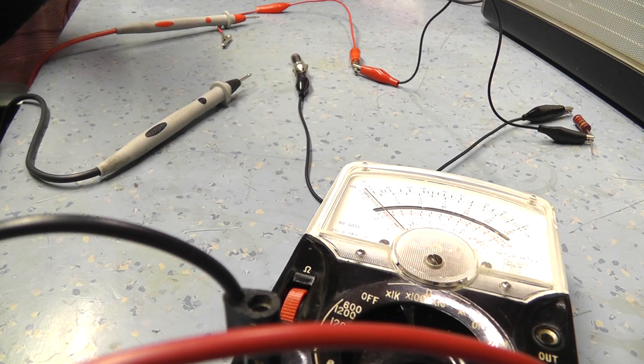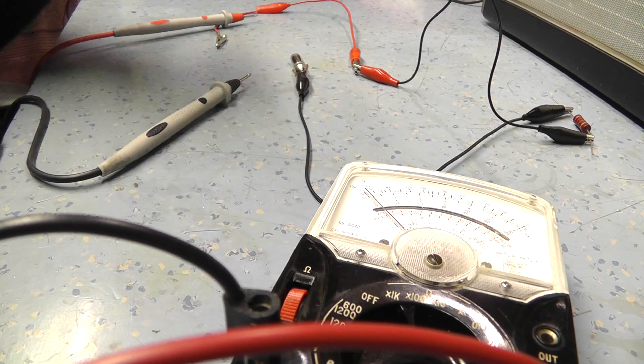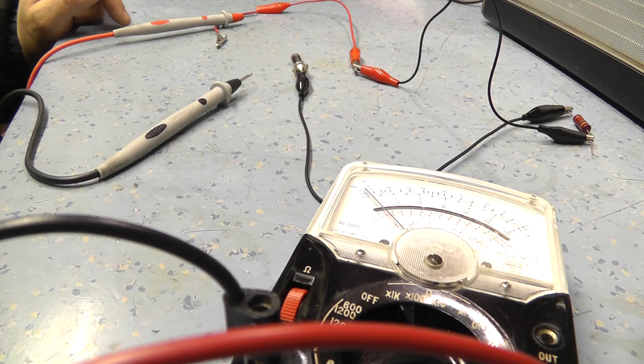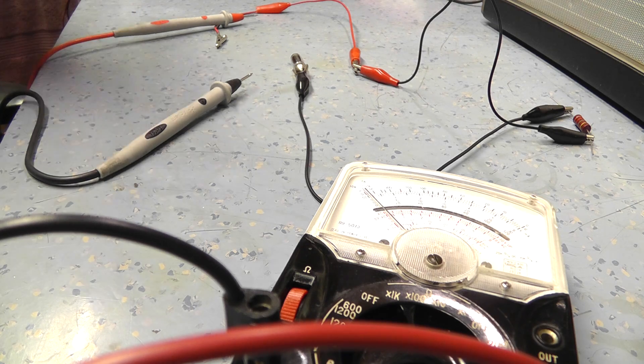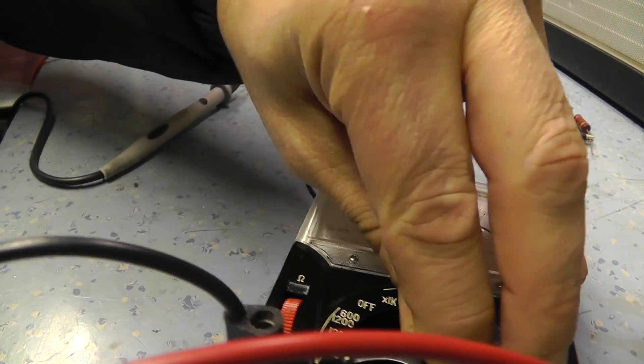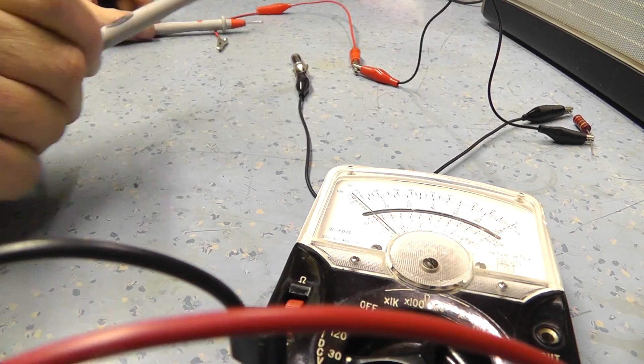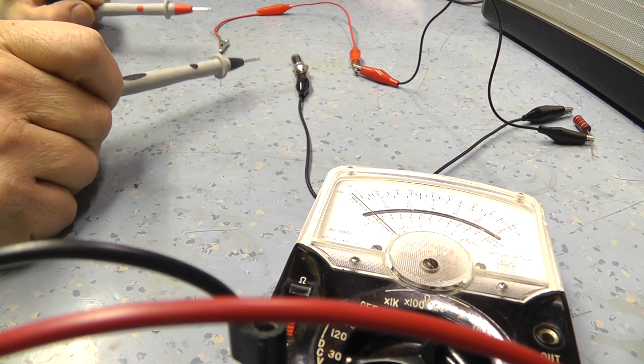But with an analogue meter, if you're supplying a load on that circuit, you will see that there is an open circuit and you'll see that there is a problem with the supply. And with the digital meter, you can't see that.